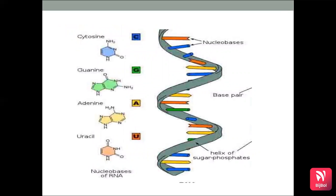In the structure of RNA, there is a helix of sugar-phosphate with nucleotide base pairs. The nucleobases of RNA are cytosine, guanine, adenine and uracil.